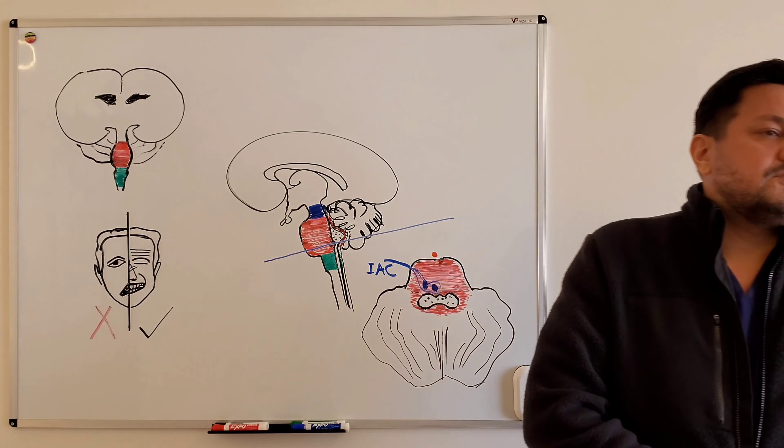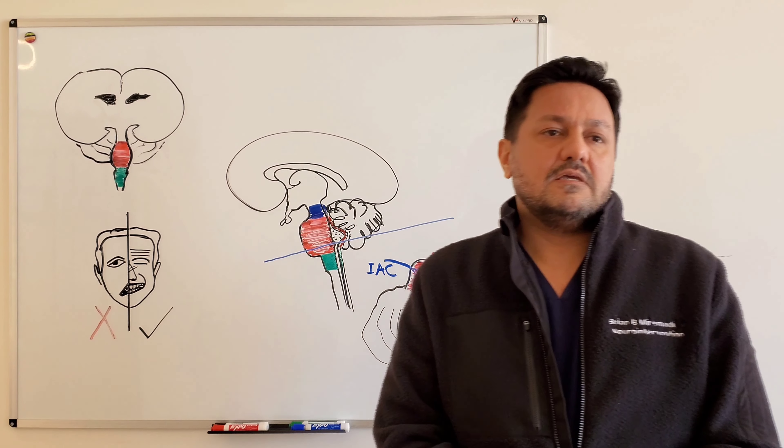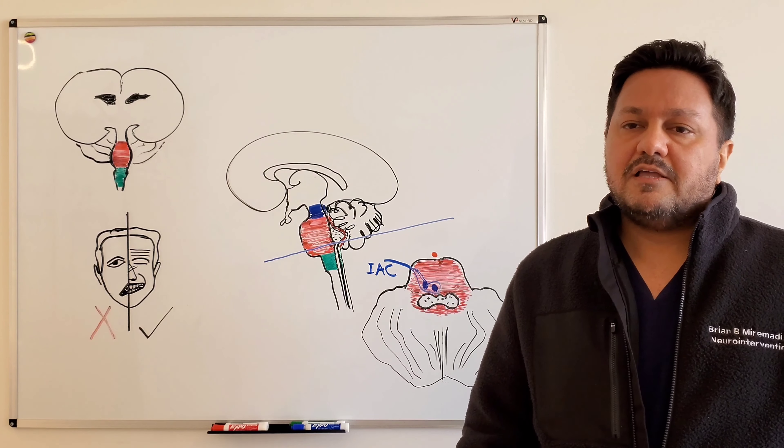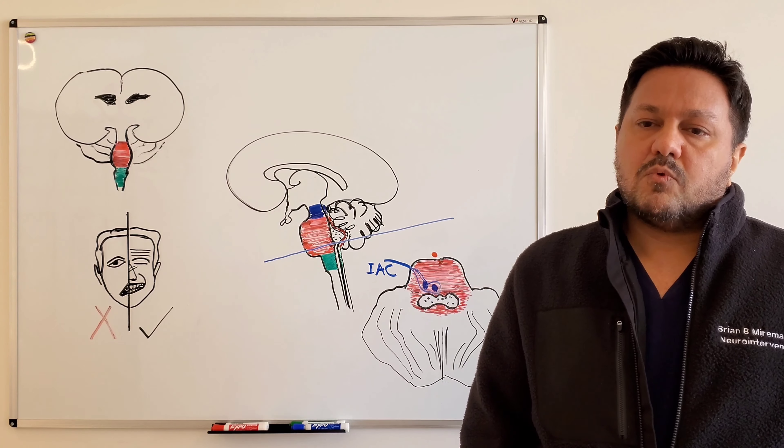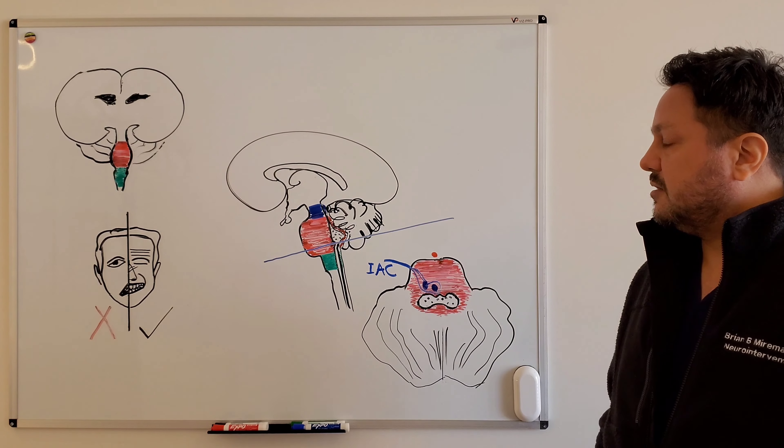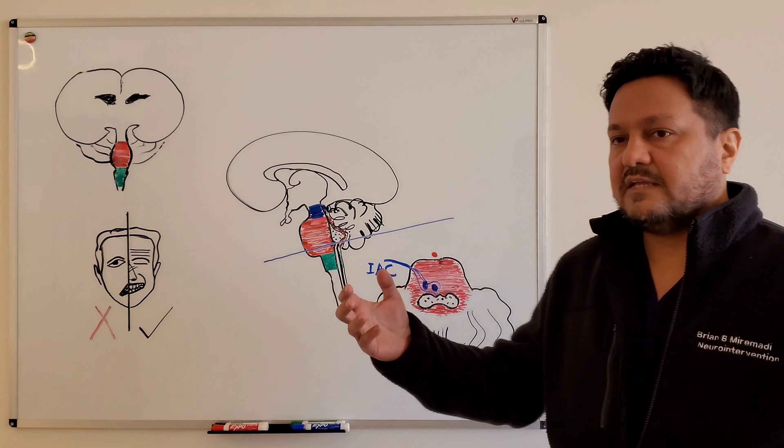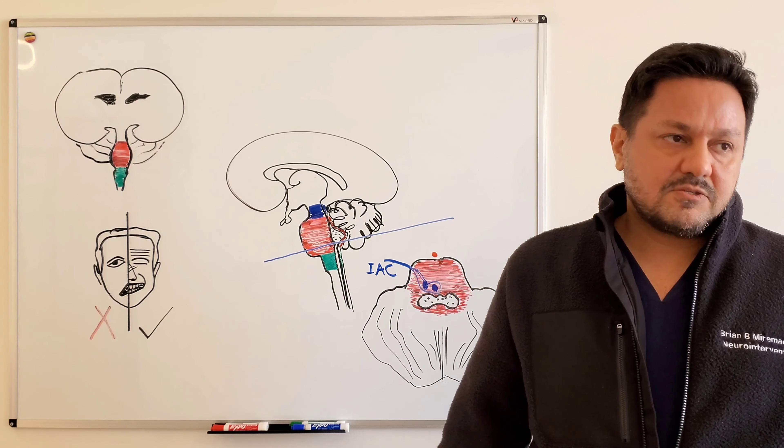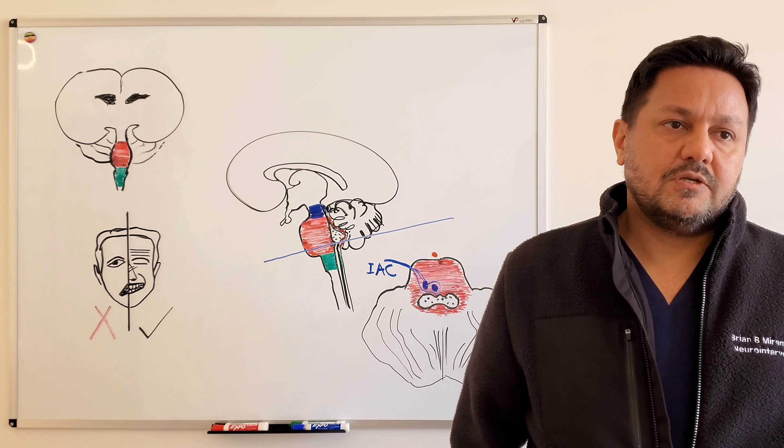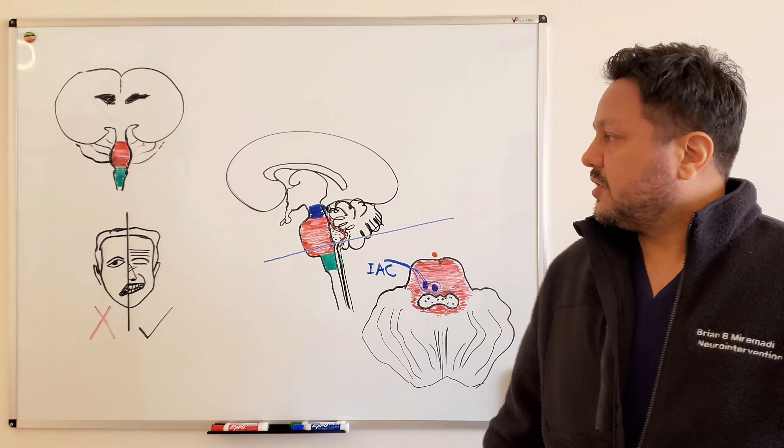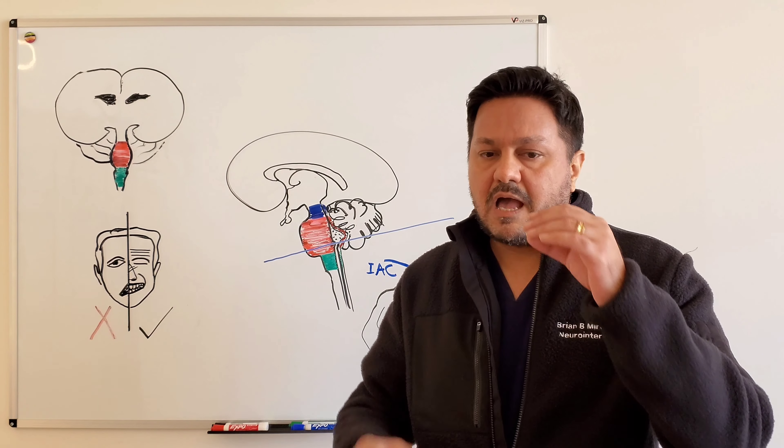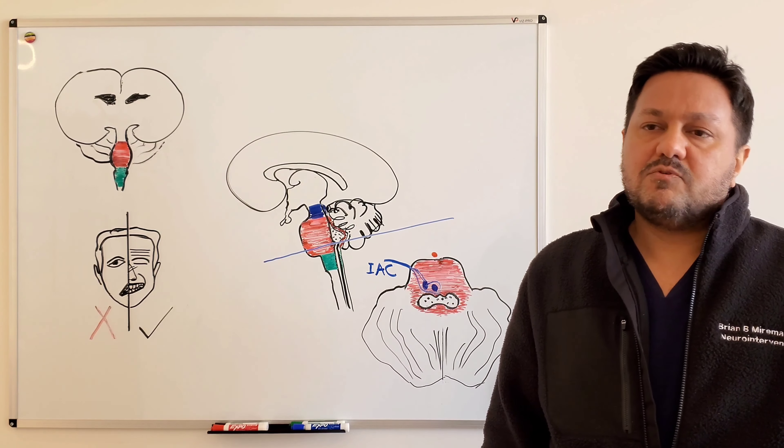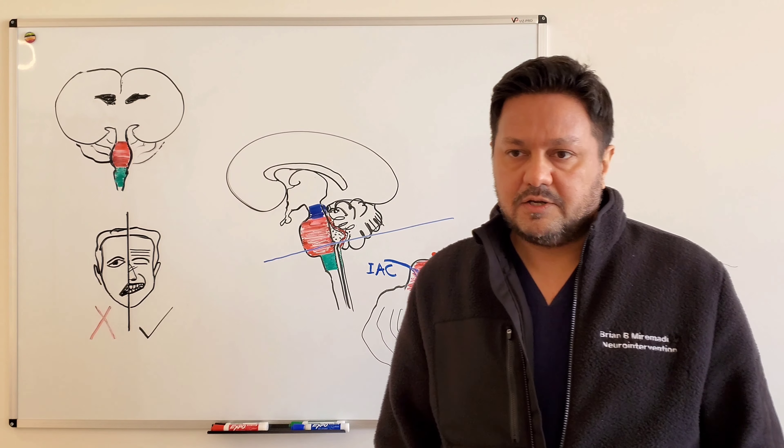Another aspect of treatment of Bell's palsy is eye care. These patients present with eye dryness for two reasons: one, disruption of the parasympathetic pathway or fibers that go to the lacrimal glands, so less tear formation or lacrimation; and also because they're not able to close their eyes as effectively as the good side. The eyes can remain open and that can also contribute to eye dryness.